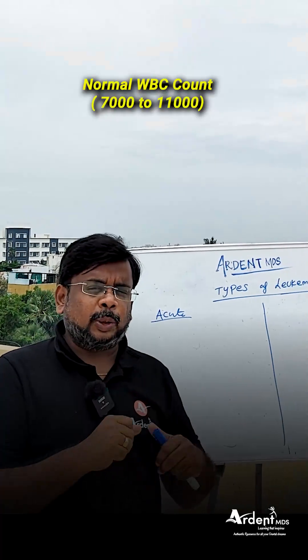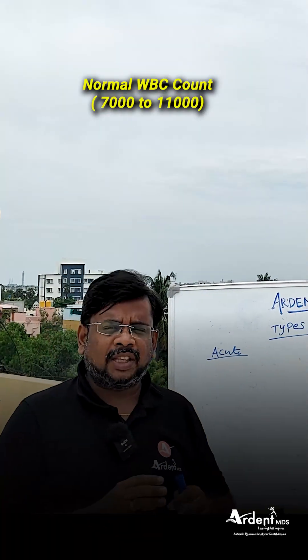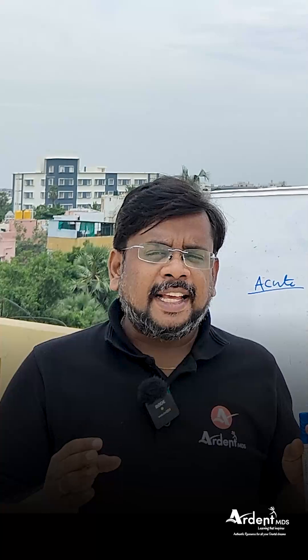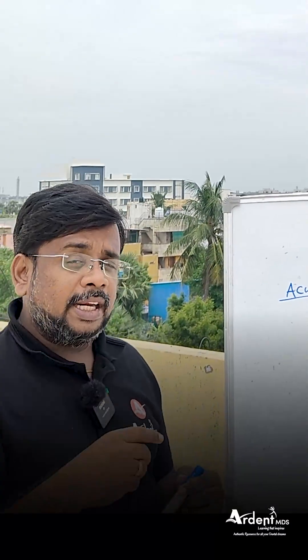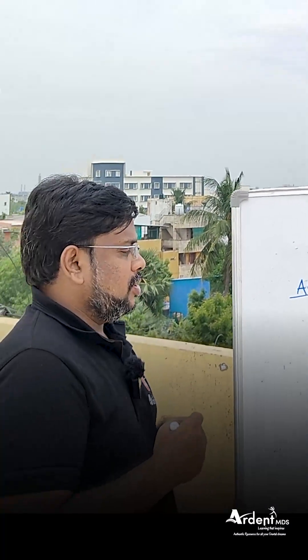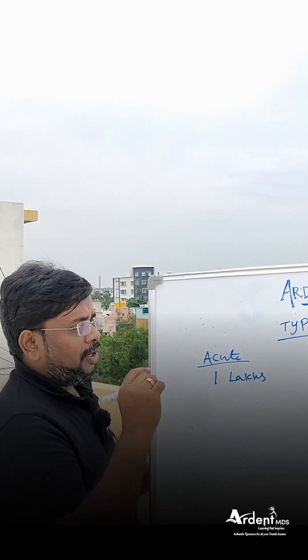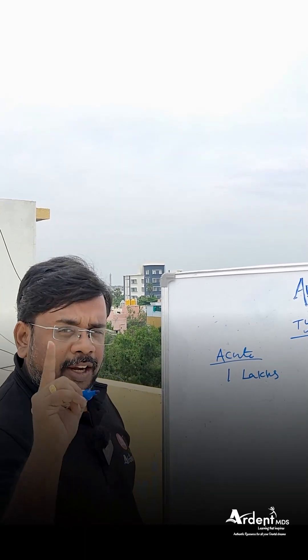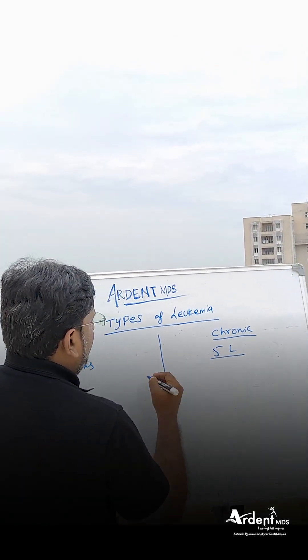What is the normal WBC and what is called leukemia? The normal WBC is around 7,000 to 11,000. But in case of leukemia, there is an excessive proliferation of WBC — almost lakhs of WBC present. Acute leukemia usually has more than 1 lakh WBC, and chronic leukemia has more than 5 lakhs of WBC.